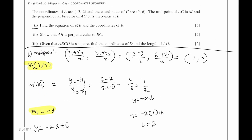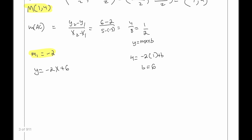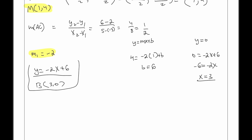Now we need to find the coordinate of B, the point at which the line cuts the x-axis, so where y equals 0. Setting 0 equals negative 2x plus 6 gives x equals 3. So B is (3, 0). This is the answer to part 1.